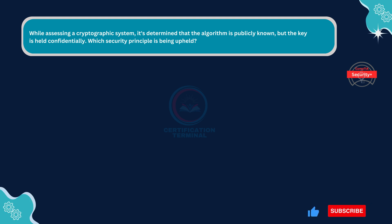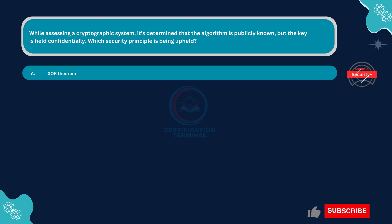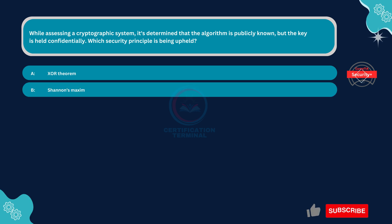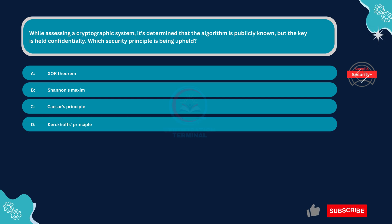While assessing a cryptographic system, it's determined that the algorithm is publicly known but the key is held confidentially. Which security principle is being upheld? Option A: XOR theorem. Option B: Shannon's maxim. Option C: Caesar's principle. Option D: Kirchhoff's principle.